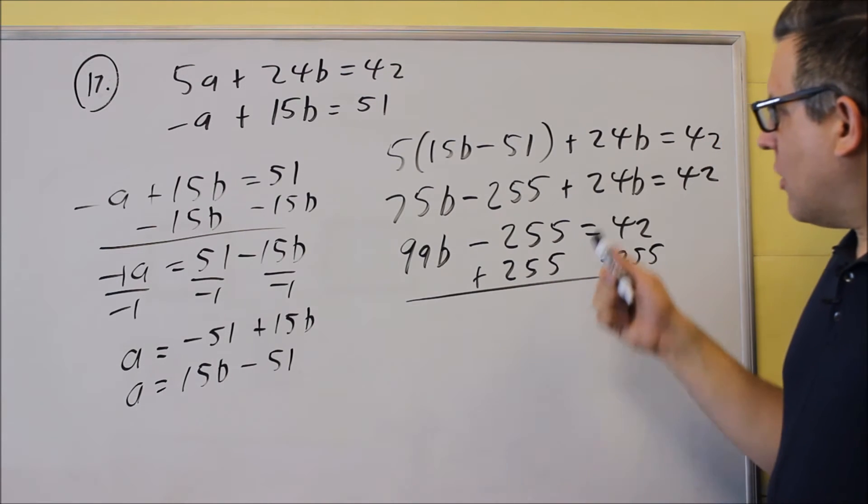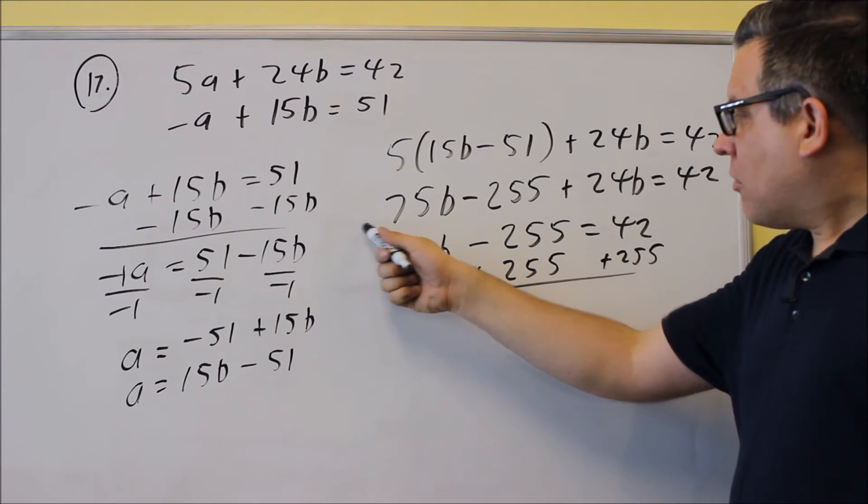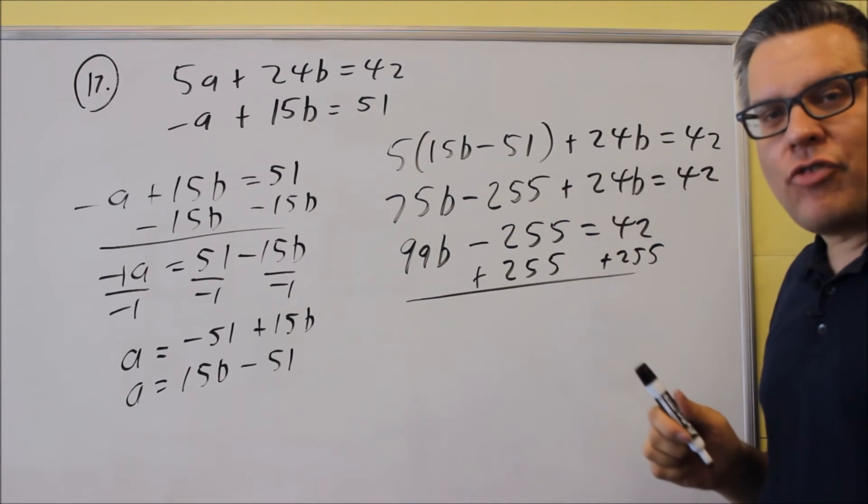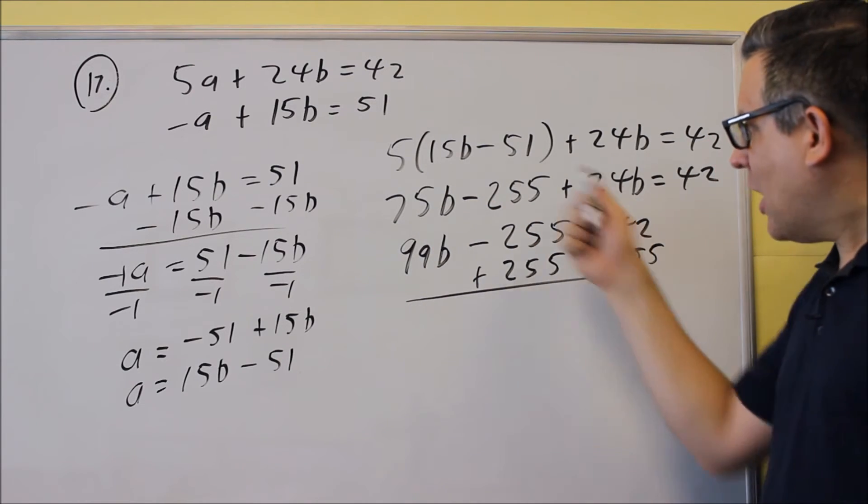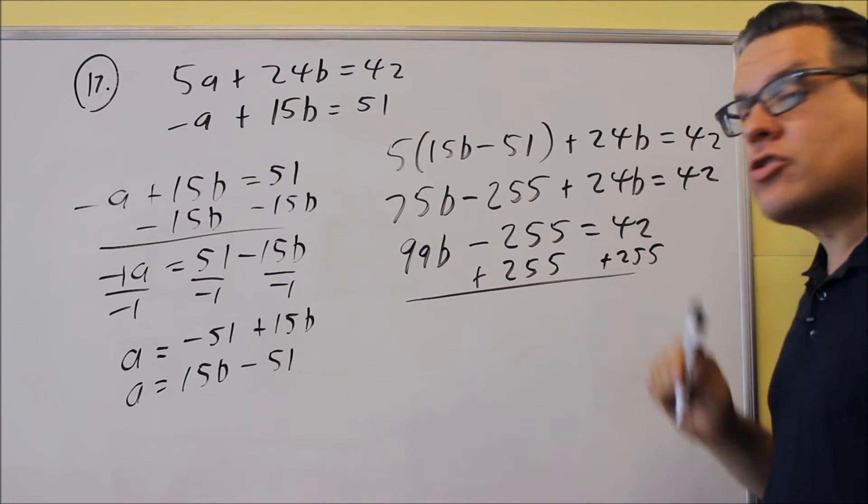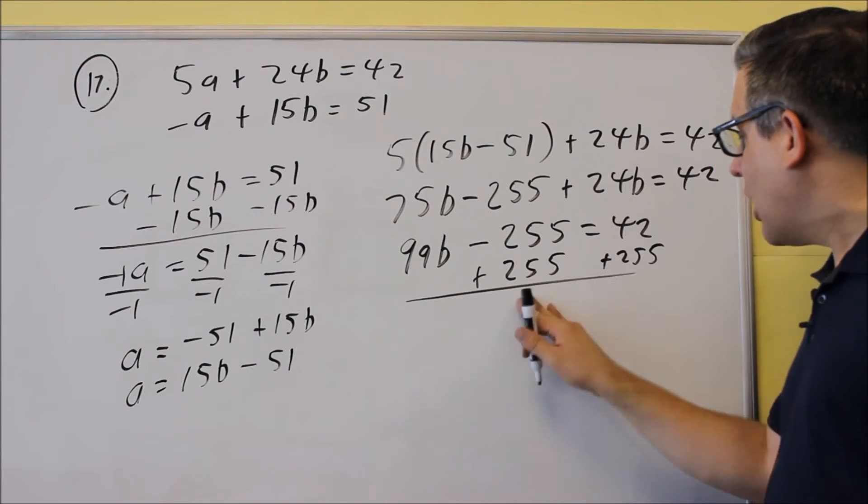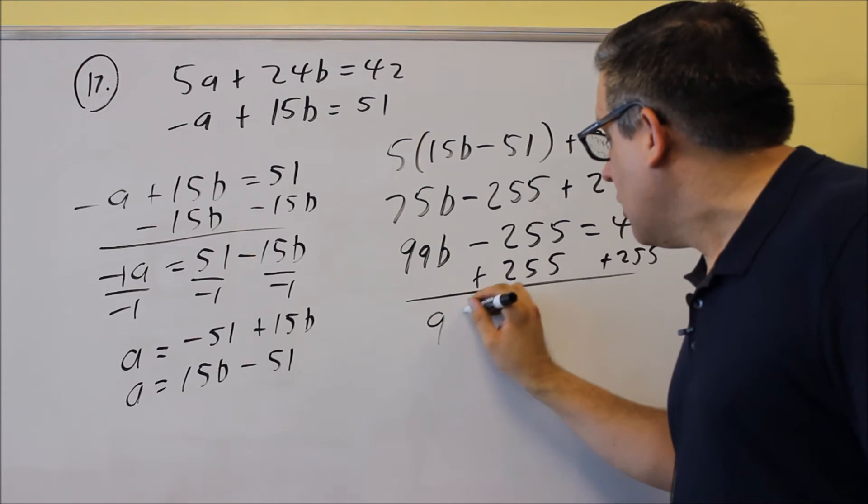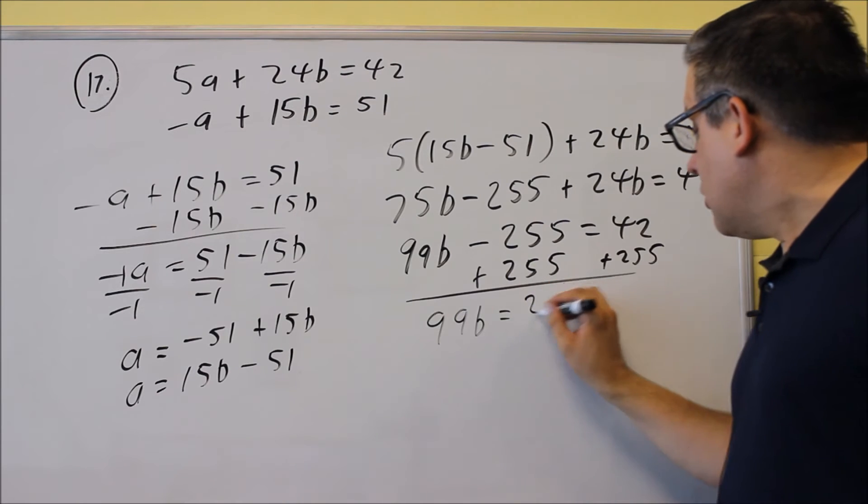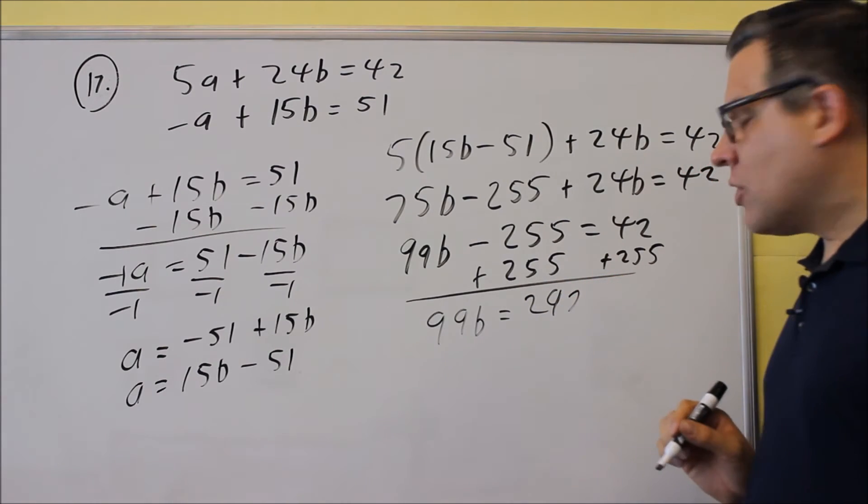Some of you guys did this on the midterm. Some of you guys I saw doing minus 24 and minus 24 here and cancel out the 24 and we get 75 minus 24. That's not correct. You can't just subtract something on the same side of the equation. You have to do the operation to both sides. Okay, so we're doing that on both sides of the equation here. You get 99b and then when you add that together, you're going to get 297.